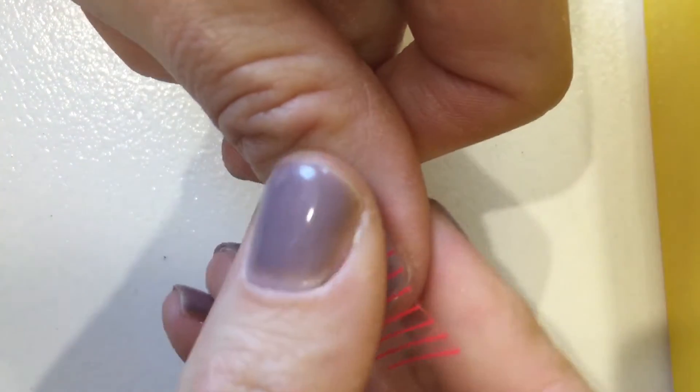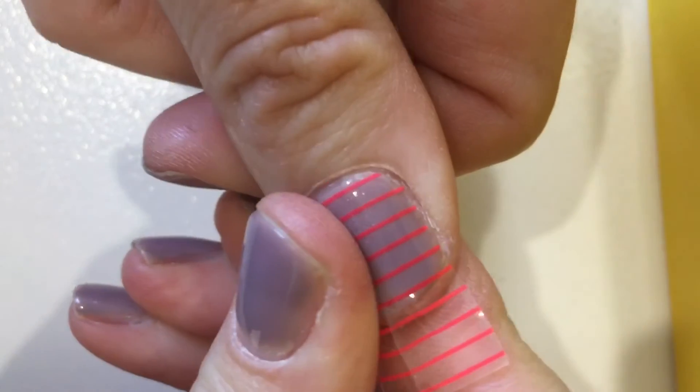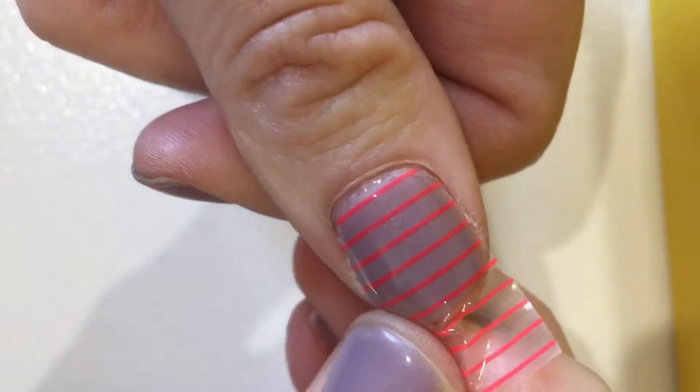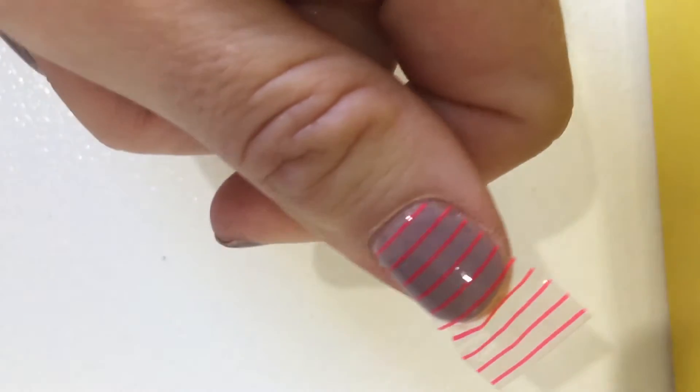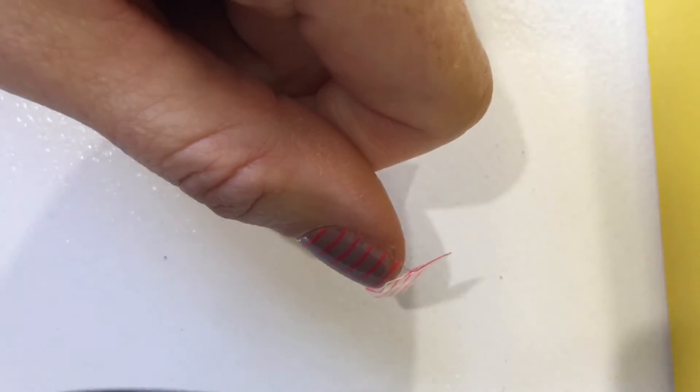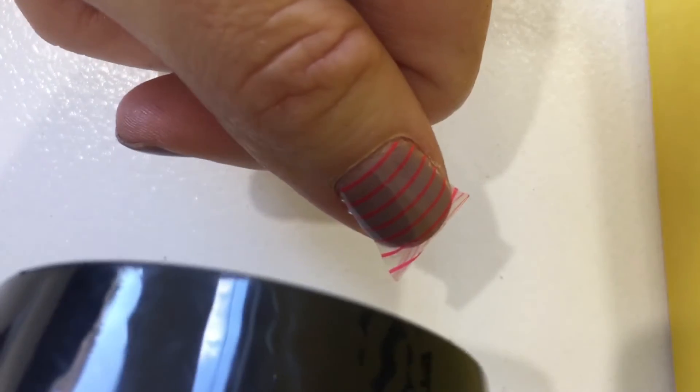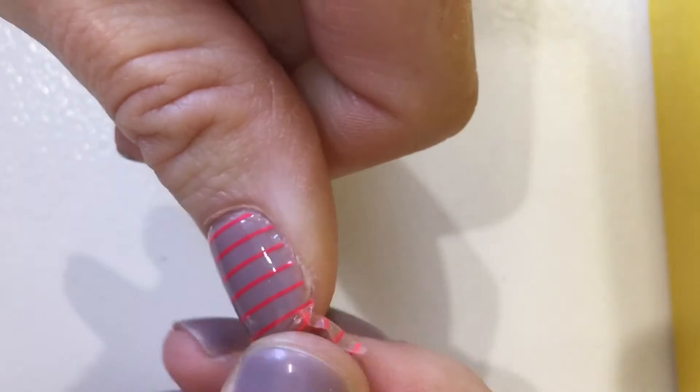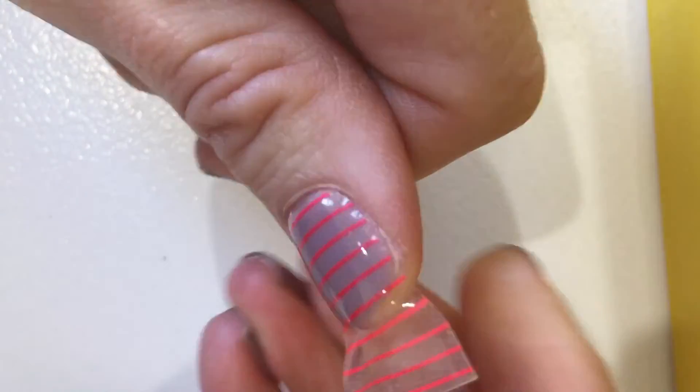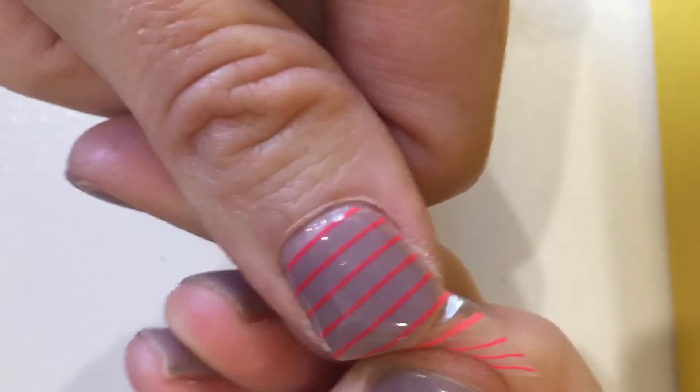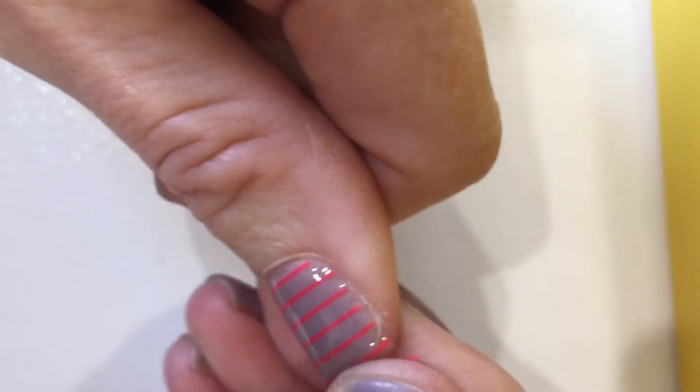Okay, now use the back of your thumb. Just kind of pull down on the top. It should just conform to your nail.